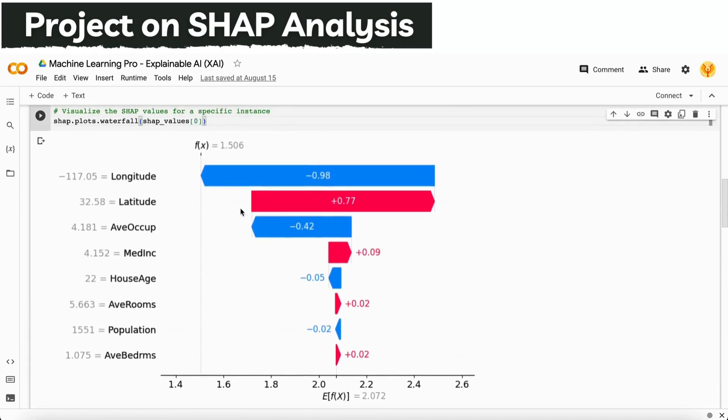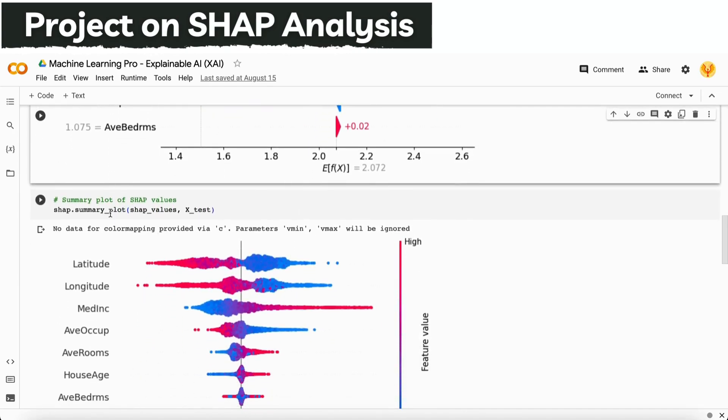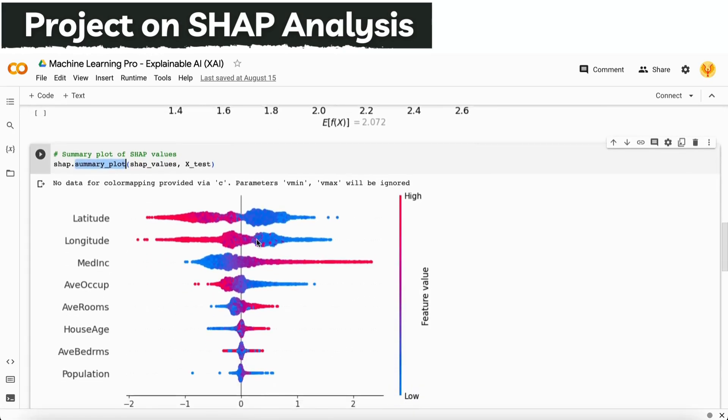We can also plot some other values because this waterfall plot is only for a specific data point, not for all the data points in our dataset. It is for a specific data point only. If the data point changes, this plot also changes. To get the plot for all the data points, we use the summary plot.